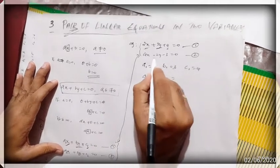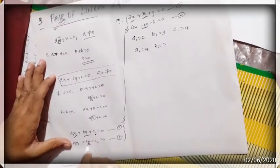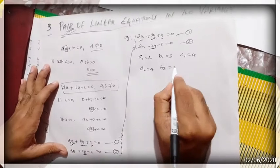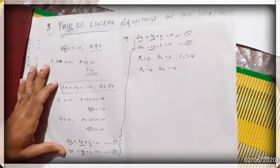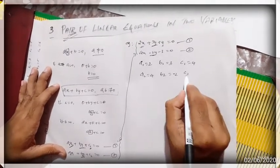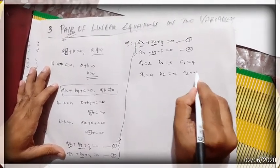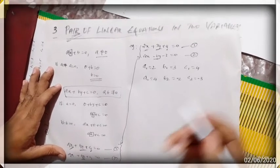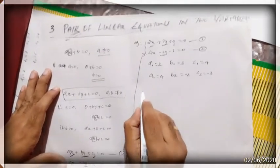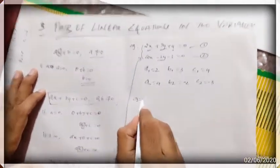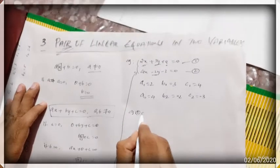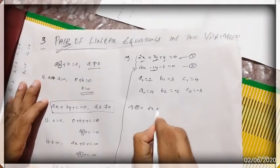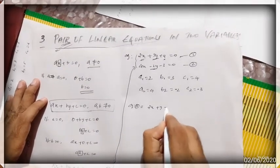For the second equation: a₂ = 4, b₂ = −2 (since the term is −2y, the negative sign is included), and c₂ = −3.